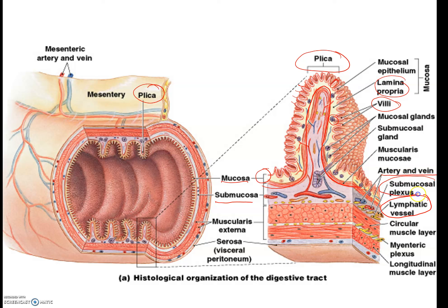The submucosal plexus consists of nerves serving the submucosa. We have the muscularis externa, which has different orientations of circular muscles — one layer pointing in one direction and another layer pointing in a perpendicular direction. This allows the digestive tract to contract laterally and horizontally. That peristaltic contraction allows food to roll through the digestive tract. Then we have the serosa and the visceral peritoneum, which is basically a layer of tissue holding everything together.